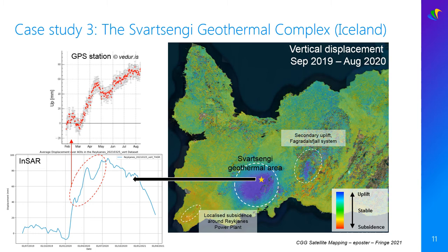On the displacement map, you can also see an uplift to the east of Svartsengi. This unrest has led to an eruption which is still ongoing at the moment. And to the southwest tip of the peninsula, a subsidence was observed at the Reykjanes power plant. More investigation would be required to understand the origin of that deformation signal.